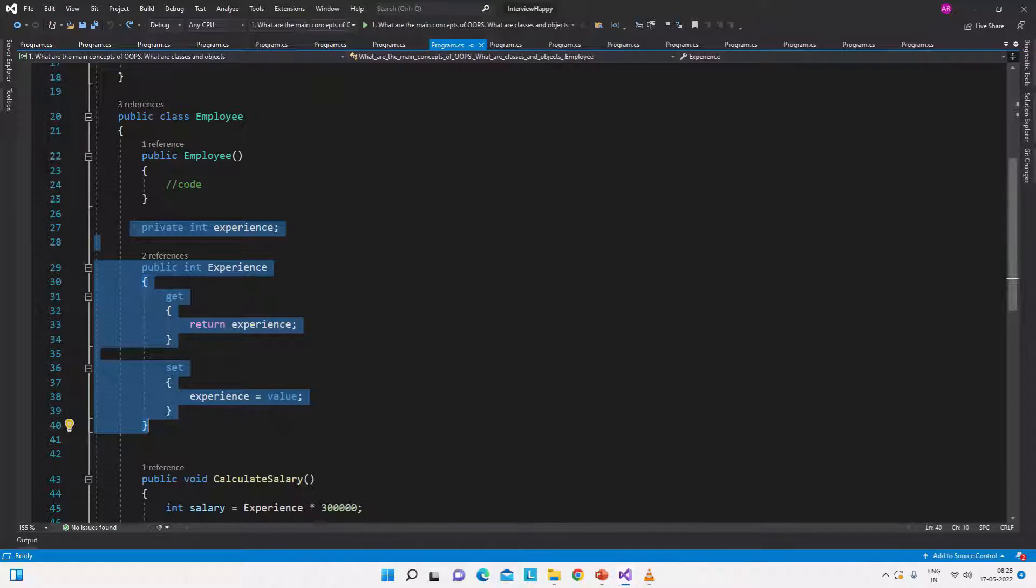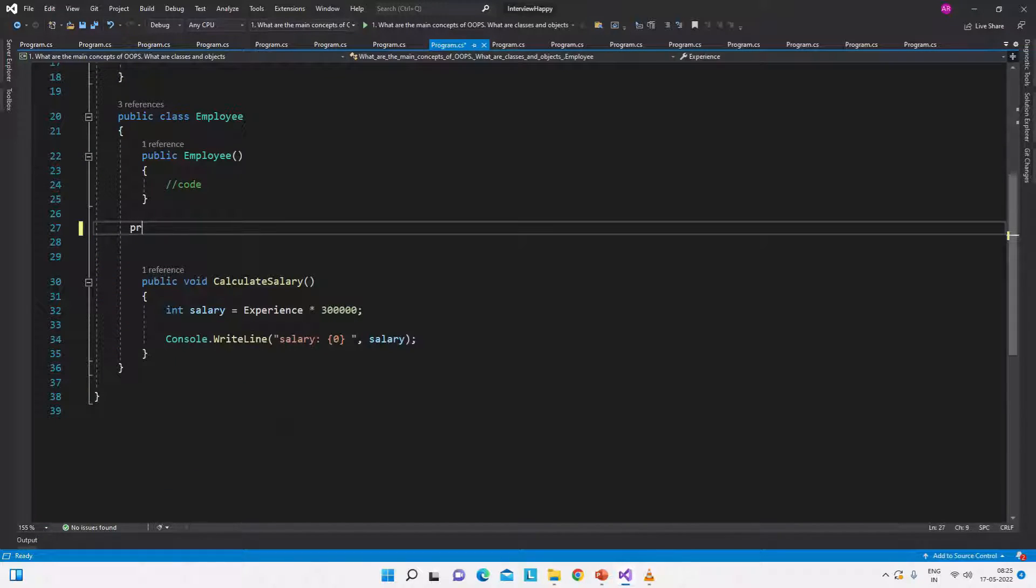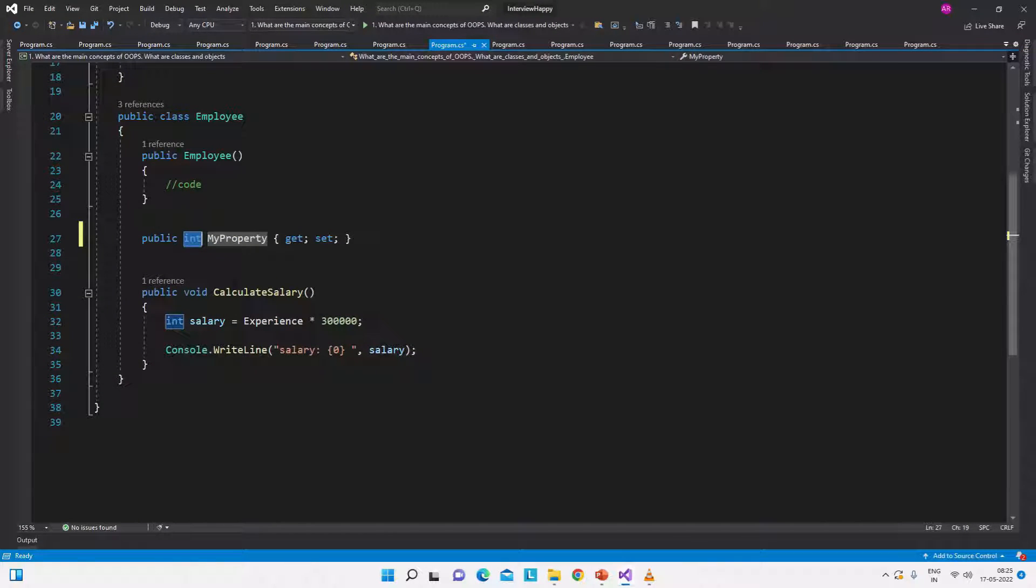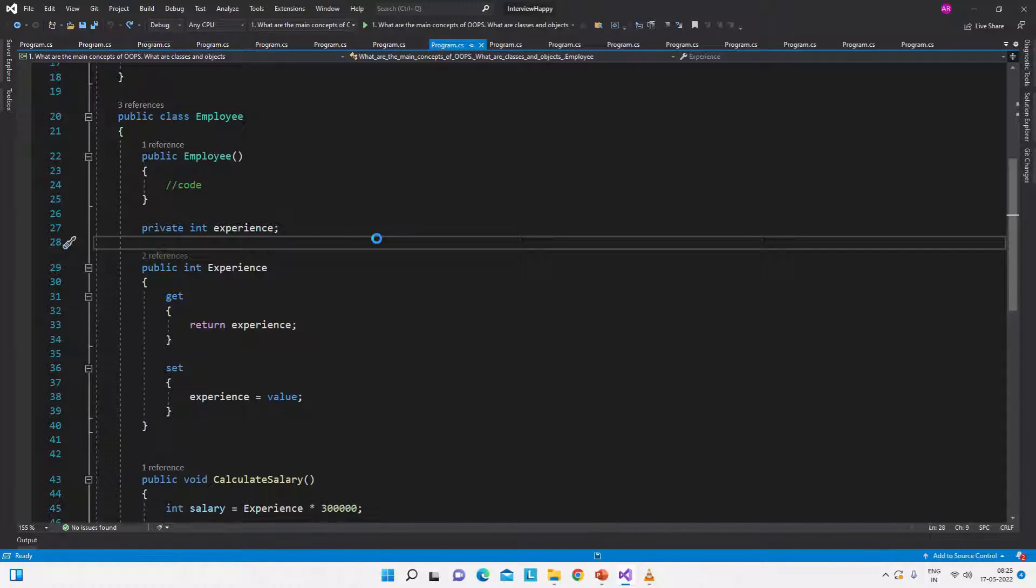Now one important thing is this field and this property. You can write in a single line which is like we can just type prop and double tab and then we can write experience. So now this single line of code is doing the same thing which a line of field and multiple lines of properties were doing. So this is the short form which is nowadays used. This is nothing else but the short form of this code.